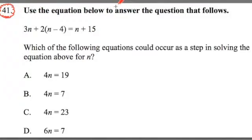It says use the equation below to answer the question that follows. It gives us an equation. An equation is two expressions that are equal to each other and it says which of the following equations could occur as a step in solving the equation above for n. So we don't actually need to solve for n. We need to find a step in the process on the way to solving for n. So essentially we just need to do our algebraic computation very carefully and be able to match up one of those steps with one of these answers.